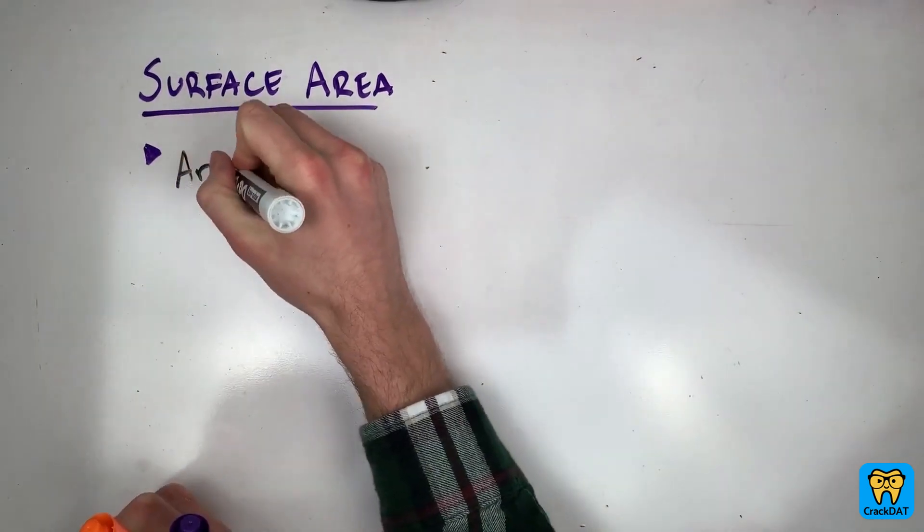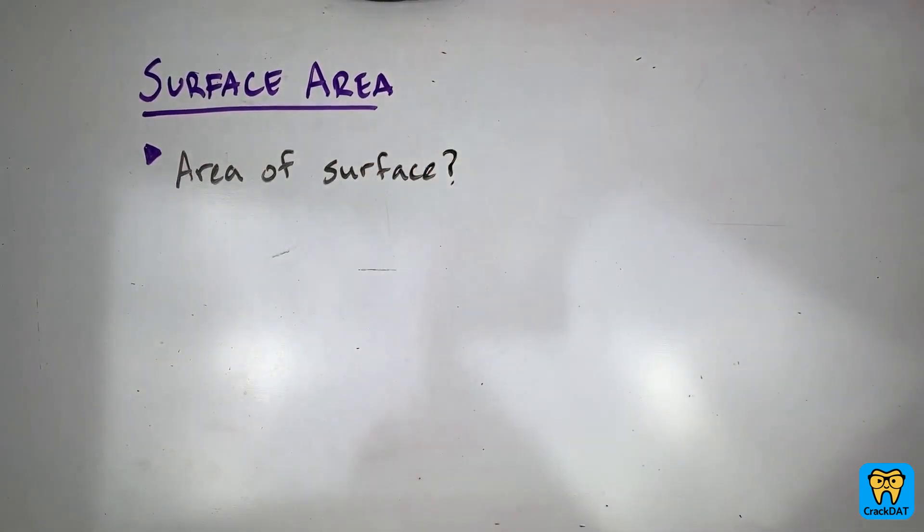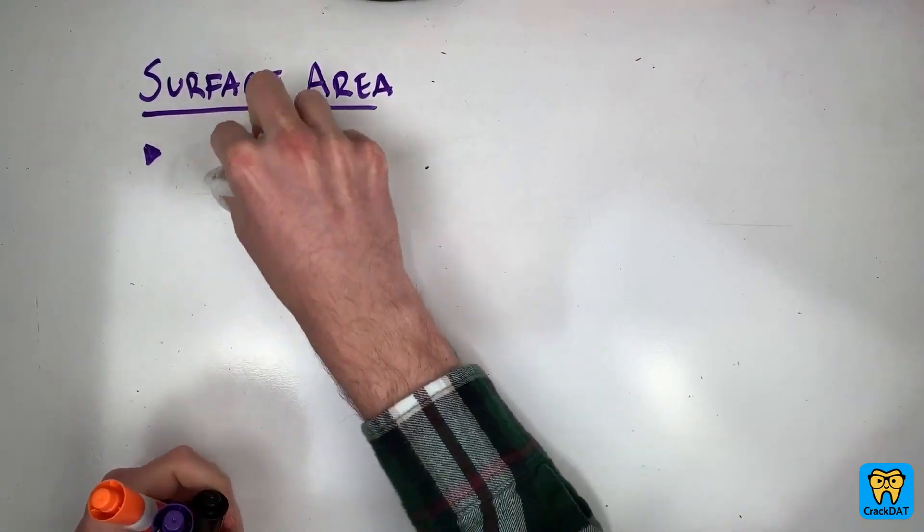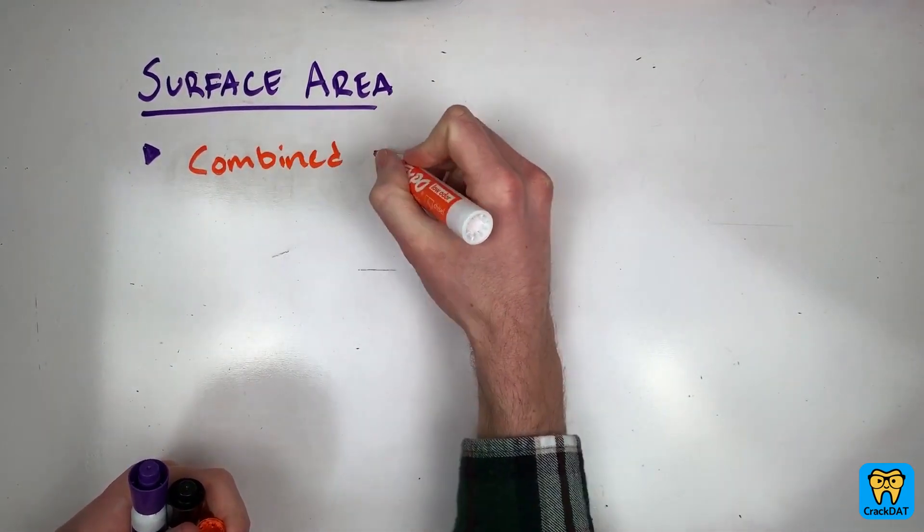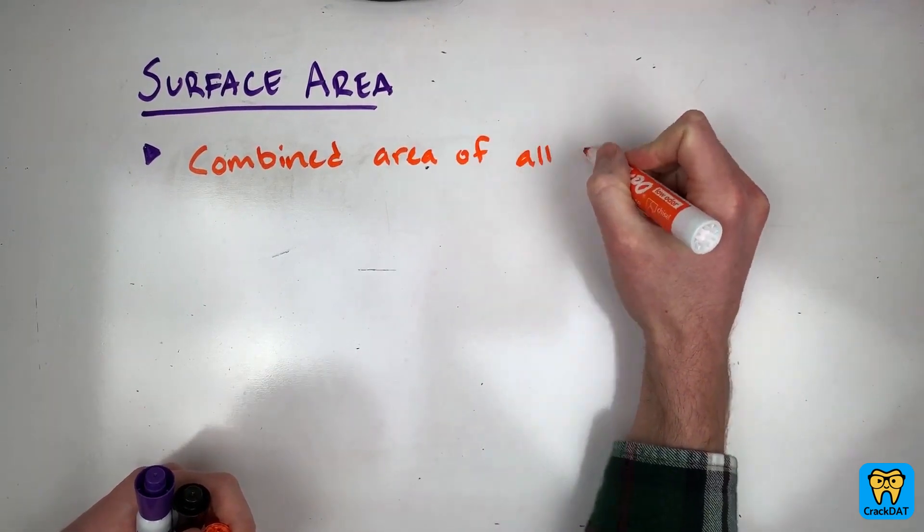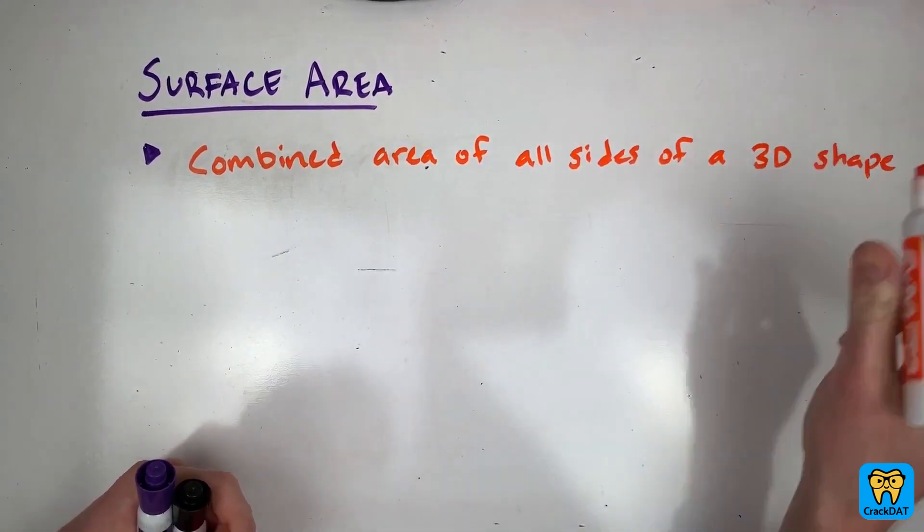The surface area of a 3D shape is the shape of its surface? That feels too easy. Wait. No, no, this is right here. That's totally right. The surface area of any 3D shape is the combined area of all of its sides or surfaces.